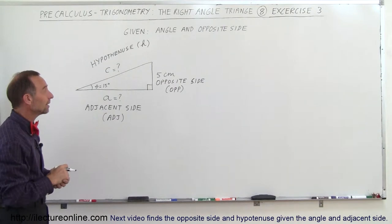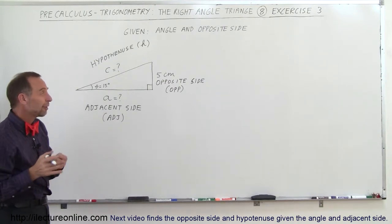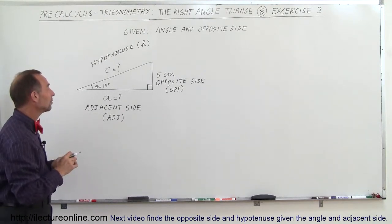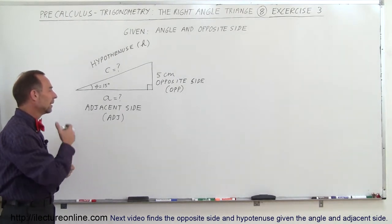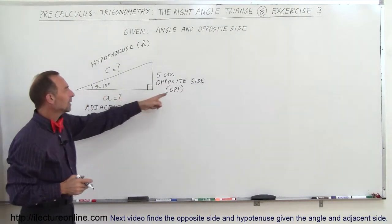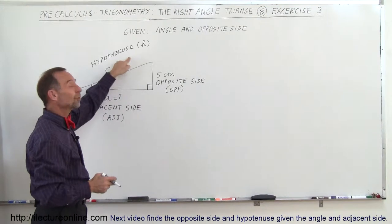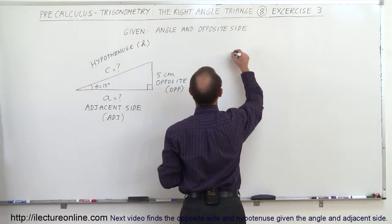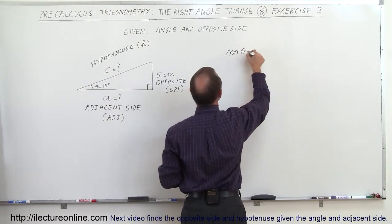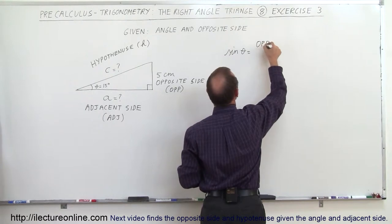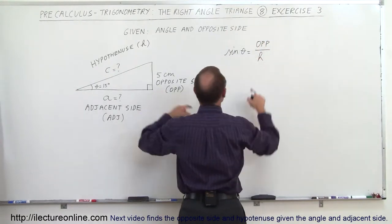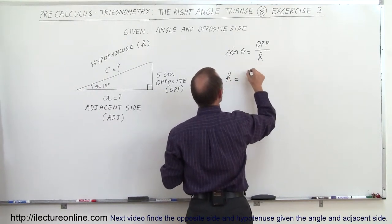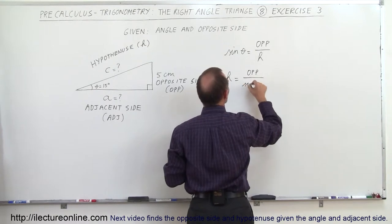Now we want our basic trigonometric identities. We have two that are very practical: the sine and the cosine. The sine relates the opposite side to the hypotenuse, and the cosine relates the adjacent side to the hypotenuse. If you use the sine and you relate the opposite side to the hypotenuse, you know the opposite side but you don't know the hypotenuse, so you can go ahead and find what the hypotenuse is. The sine of theta by definition is equal to the ratio of the opposite side divided by the hypotenuse, so H is equal to the opposite side divided by the sine of theta.